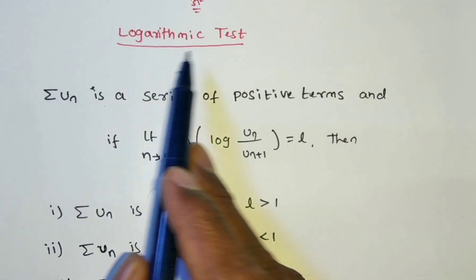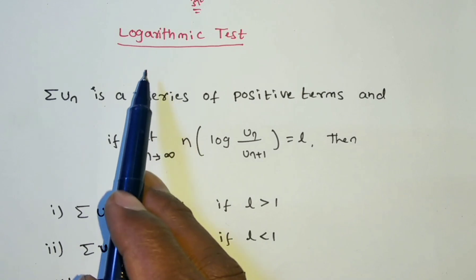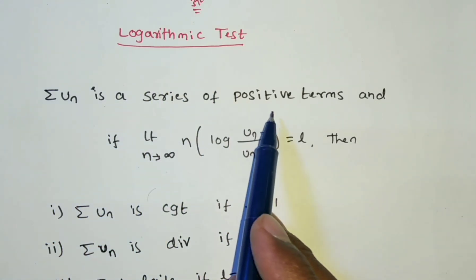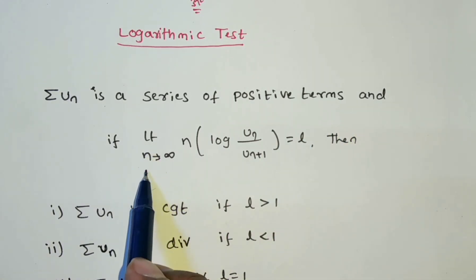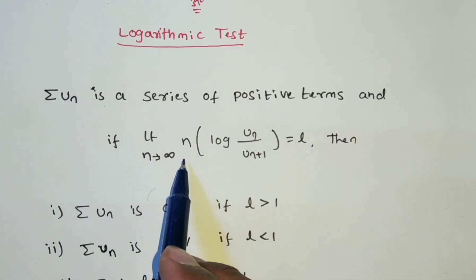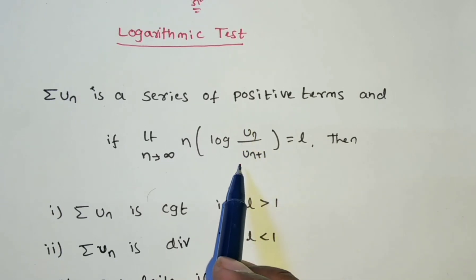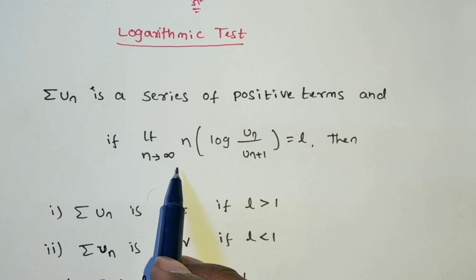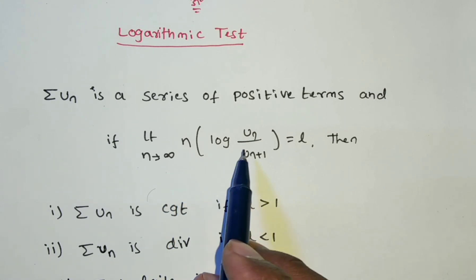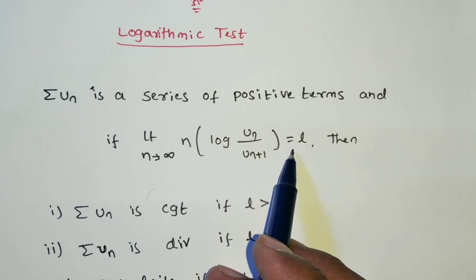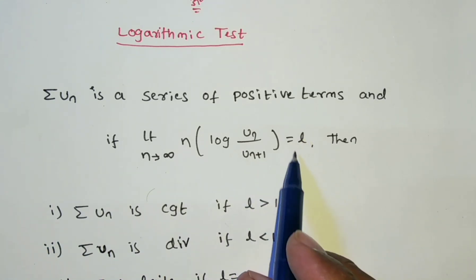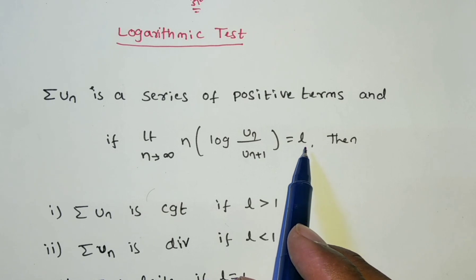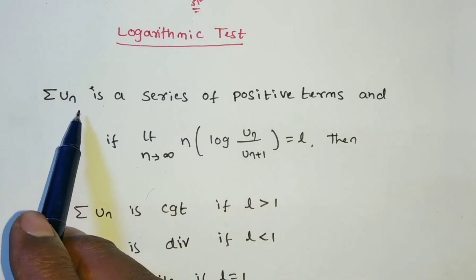Now we are discussing the logarithmic test. The statement is: given summation un, a series of positive terms, if the limit as n tends to infinity of n times log(un/un+1) equals l, then based on l, we can decide whether the given series is convergent or divergent.